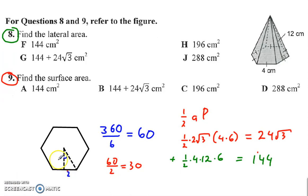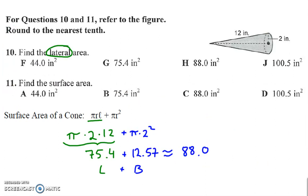And then so in a 30, 60, 90, if this is two, then this side over here is two radical three. So I take half times the apothem, which is two radical three, times the perimeter, which is four times six, and that gets me 24 radical three. So I'm going to have 144 plus 24 radical three.